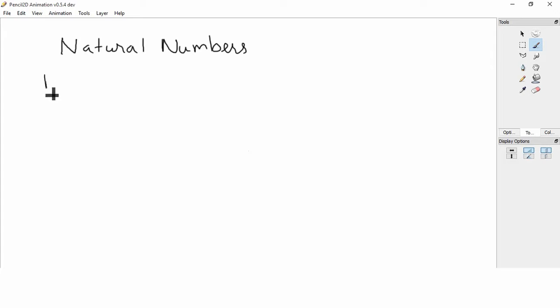We denote natural numbers with capital letter N and we are writing it in set form, so it consists of numbers right from 1, 2, 3, 4 so on till N, where N stands for infinite. N can be any number, for example 100, 1000, 10,000 or even 100,000.